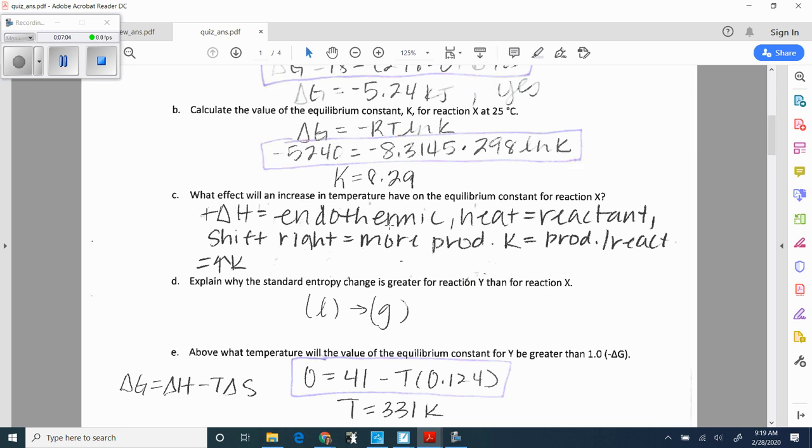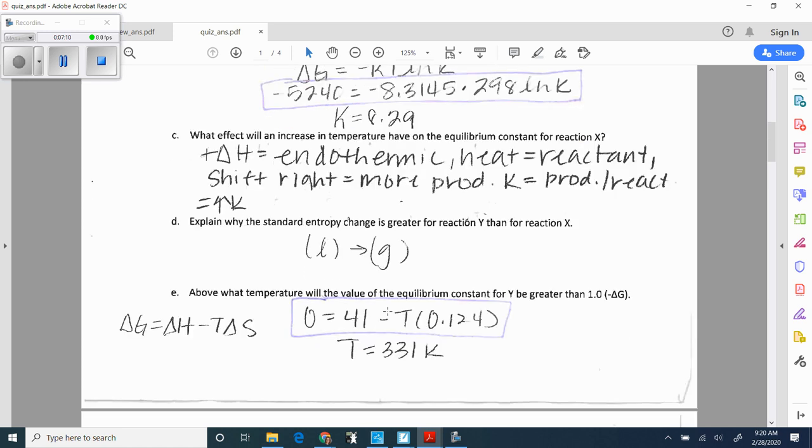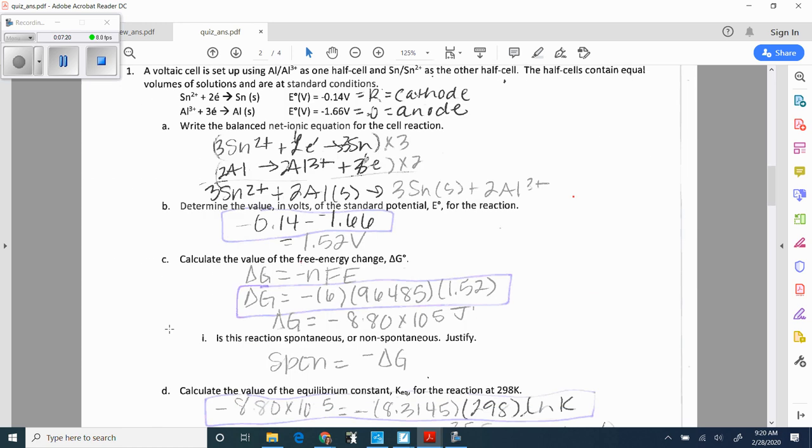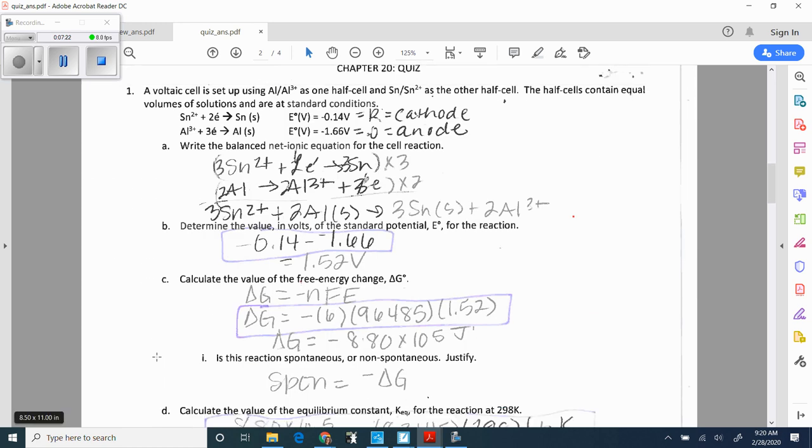For letter D, going from a liquid to a gas is a bigger change. The other one just went from gas to gas. Letter E are all the words for set it equal to zero, solve for T. It has H in it, so it has to be kilojoules.